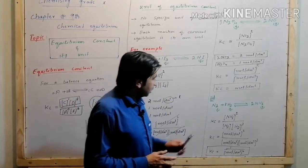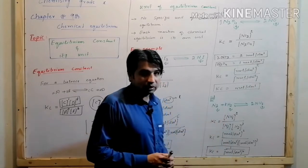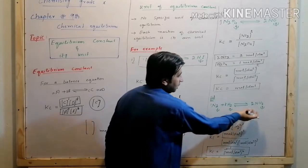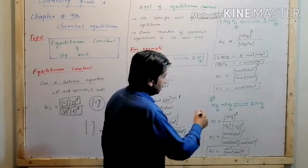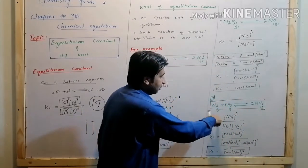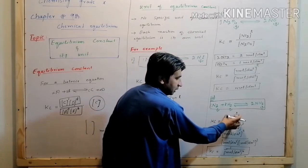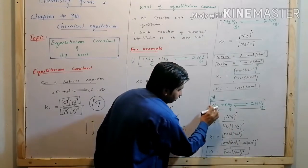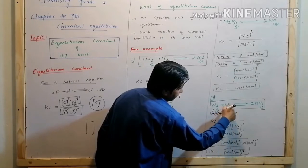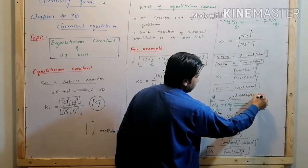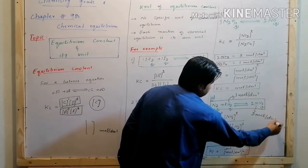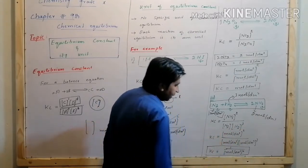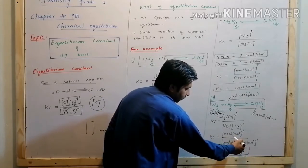Example 3: 1 mole of N2 combines with 3 moles of hydrogen to give 2 moles of ammonia. The concentration of N2 is 1 mol per dm³, H2 is 1 mol per dm³, and NH3 is 2 mol per dm³. Setting up Kc: numerator is (2 mol/dm³)² raised to power 2, denominator is (1 mol/dm³)¹ times (1 mol/dm³)³ — total 4 mol per dm³ in denominator.